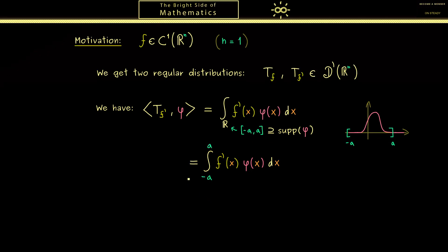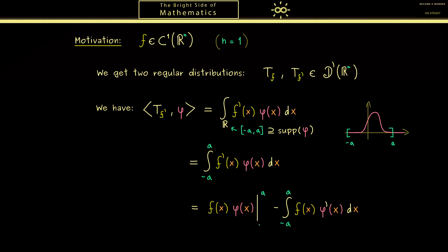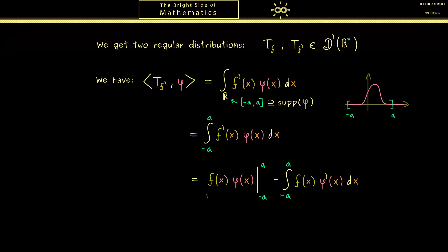Now comes the important calculation step: we use integration by parts. This means we can shift the derivative to the other factor, but with a minus sign. We also have a boundary term involving f and φ evaluated at a and −a. However, since φ(−a) = φ(a) = 0, this boundary term vanishes entirely. So only the second part remains.